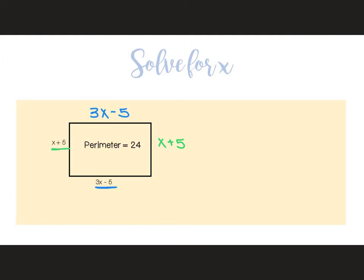Remember, for the formula, I'm adding all the sides together and it equals the perimeter, so that would be x plus five, plus three x minus five, plus x plus five, plus three x minus five, and they tell us the perimeter is 24, so it equals 24.